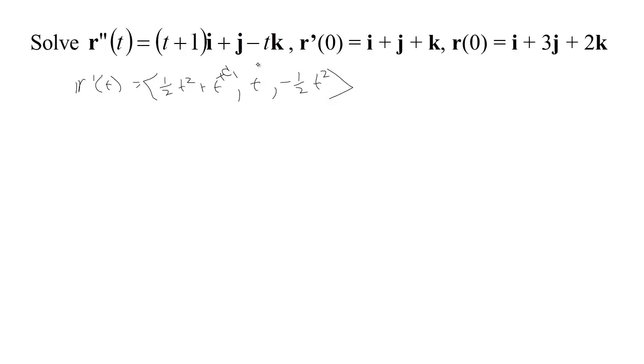This would be the general antiderivative, but I have some initial data, some initial information about the velocity. Initially when t is 0, the velocity is i plus j plus k, but from what I've just found, the velocity at time 0 is c1, c2, and c3.